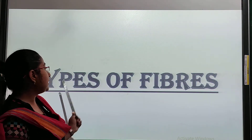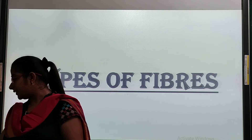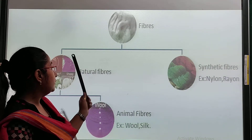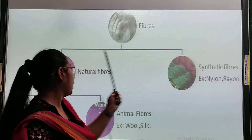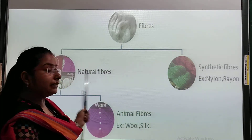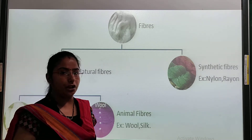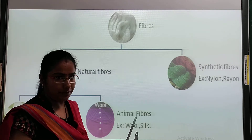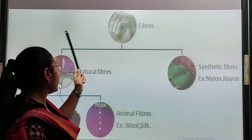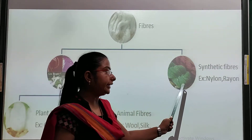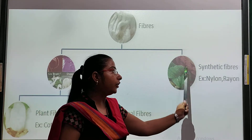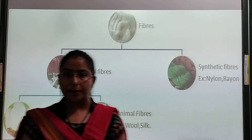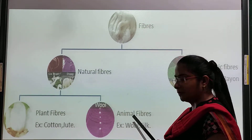Now we will see the types of fibers. There are mainly two types of fibers: natural fibers and synthetic fibers. Natural fibers are further divided into two parts: plant fibers and animal fibers. Synthetic fibers — examples are nylon and rayon.